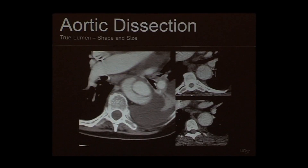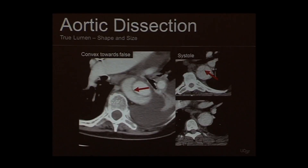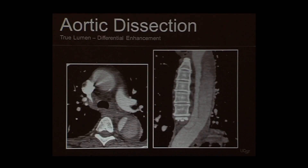When examining the anatomy, it's critical to differentiate the true lumen from the false lumen. The true lumen generally shows a convexity bulging out into the false lumen. As we acquire data running down the aorta through different cardiac phases, we can capture the aorta in systole — showing the true lumen's size — and then observe it collapse somewhat in diastole. Contrast material arrives first in the true lumen on first pass and later in the false lumen, enabling differential enhancement.